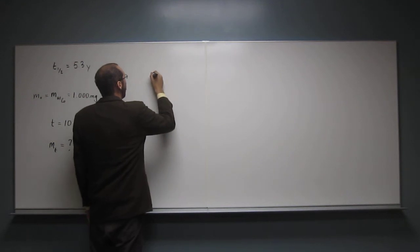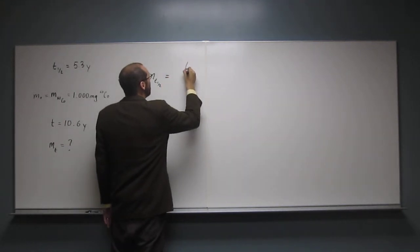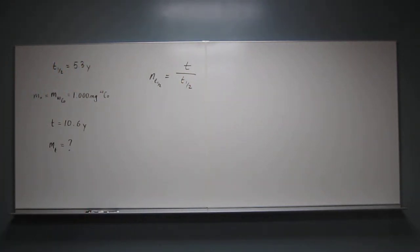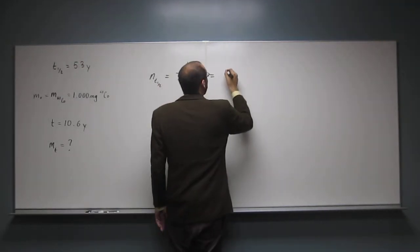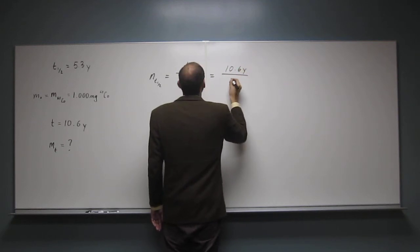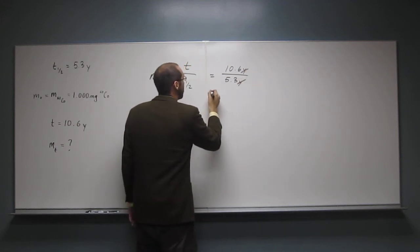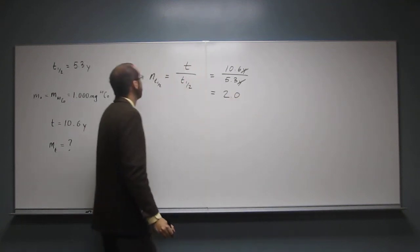So to figure that out, the number of half-lives that have passed is going to be t divided by t half. So when we do that, what do we got? 10.6 years divided by 5.3 years, like that. Years cancel, and we get 2.0.